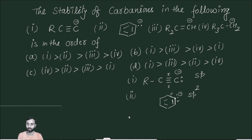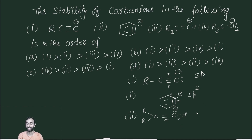Now the third case — it is an alkene (I'll write it in a specific way because it has a hidden meaning, which you will understand shortly). Again, it has one lone pair and two sigma bonds — that means it is again sp2 hybridized: two sigma bonds and one lone pair.